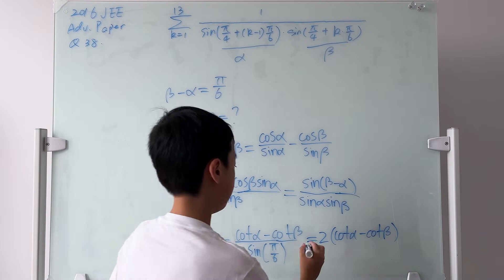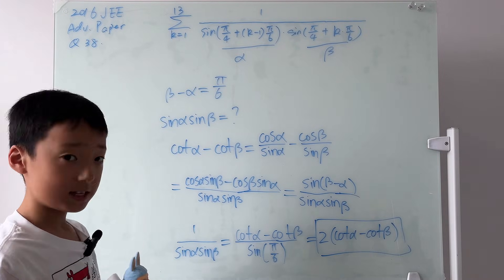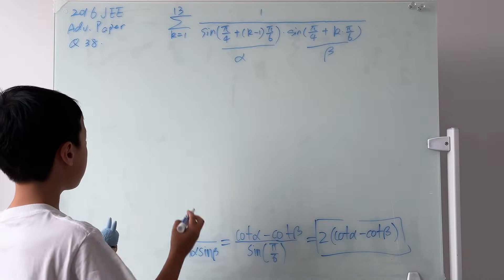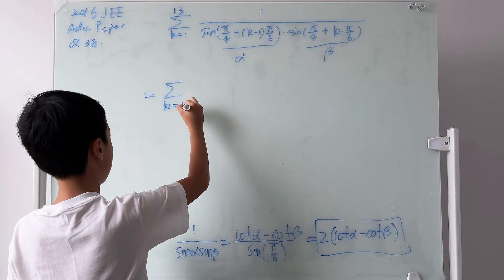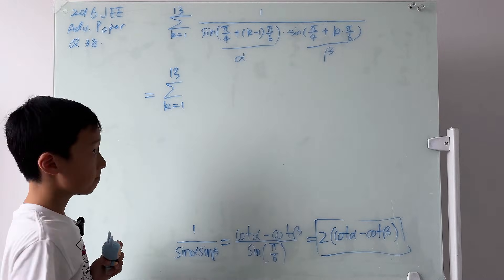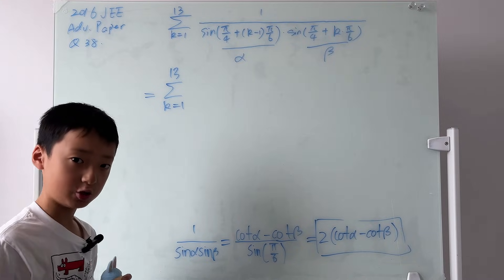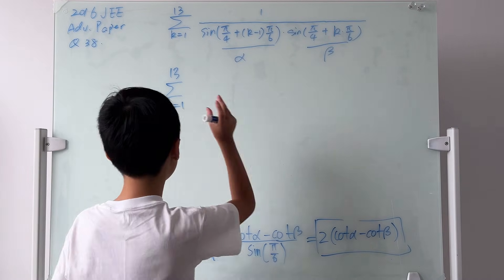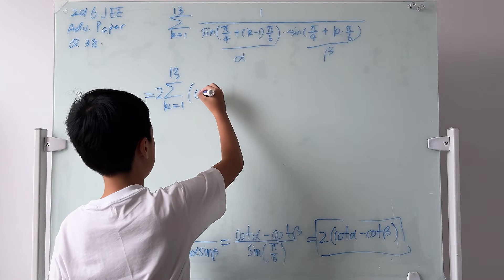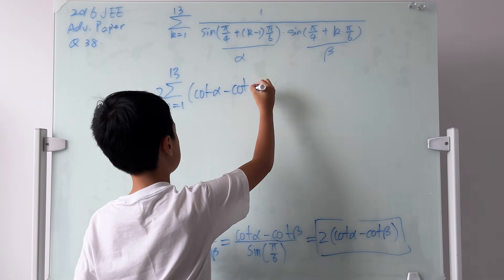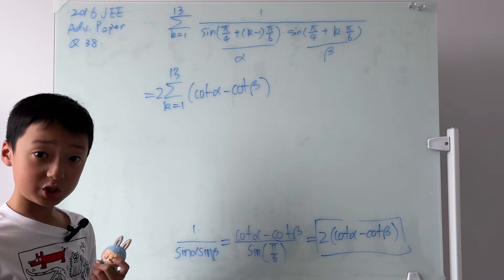Now from here, we have basically already solved the question. Now it's just a matter of computations. Well, the sum becomes sum from k equals 1 to 13 of this, which is just 2 times cotangent alpha minus cotangent beta. Now we can also put the 2 at the front, and then it's just cotangent alpha minus cotangent beta. Now, why don't we just expand the sum?